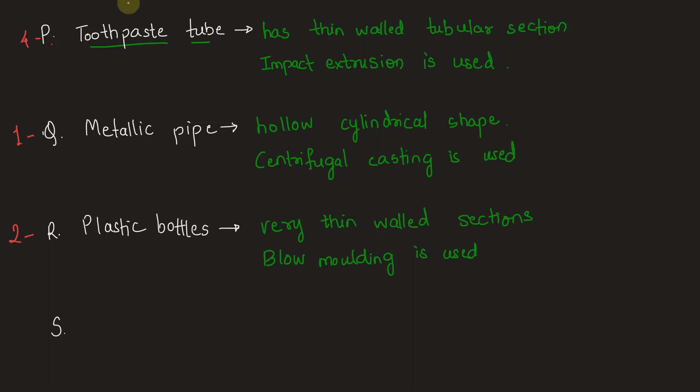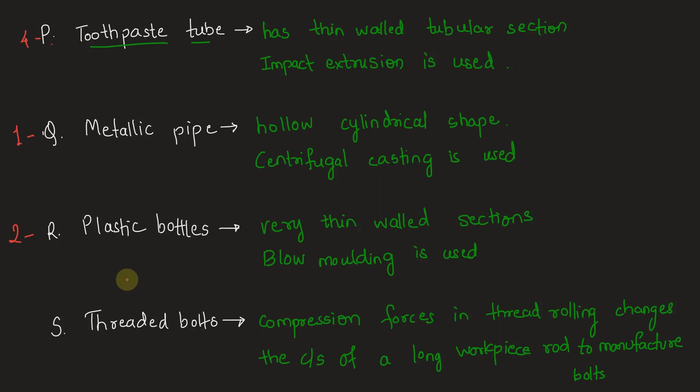Next, S, threaded bolts. The technique of thread rolling is used to manufacture threaded bolts, as it will change the cross section of a long workpiece rod and uses compression forces to do so. So S will match with number 3, which is rolling.